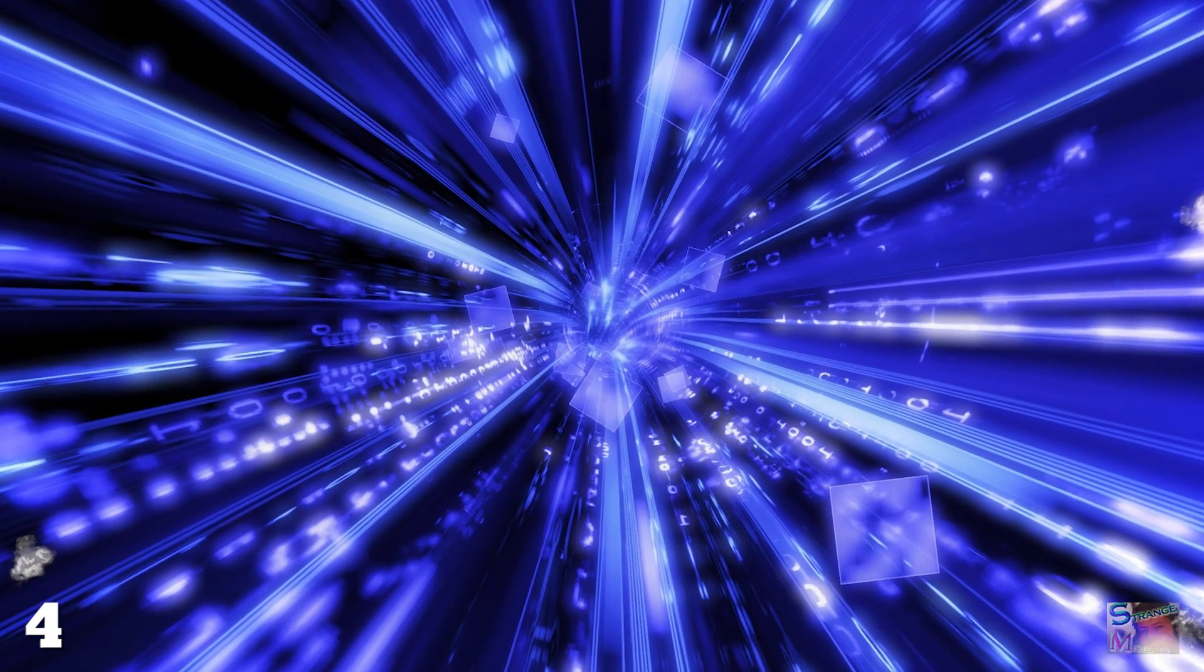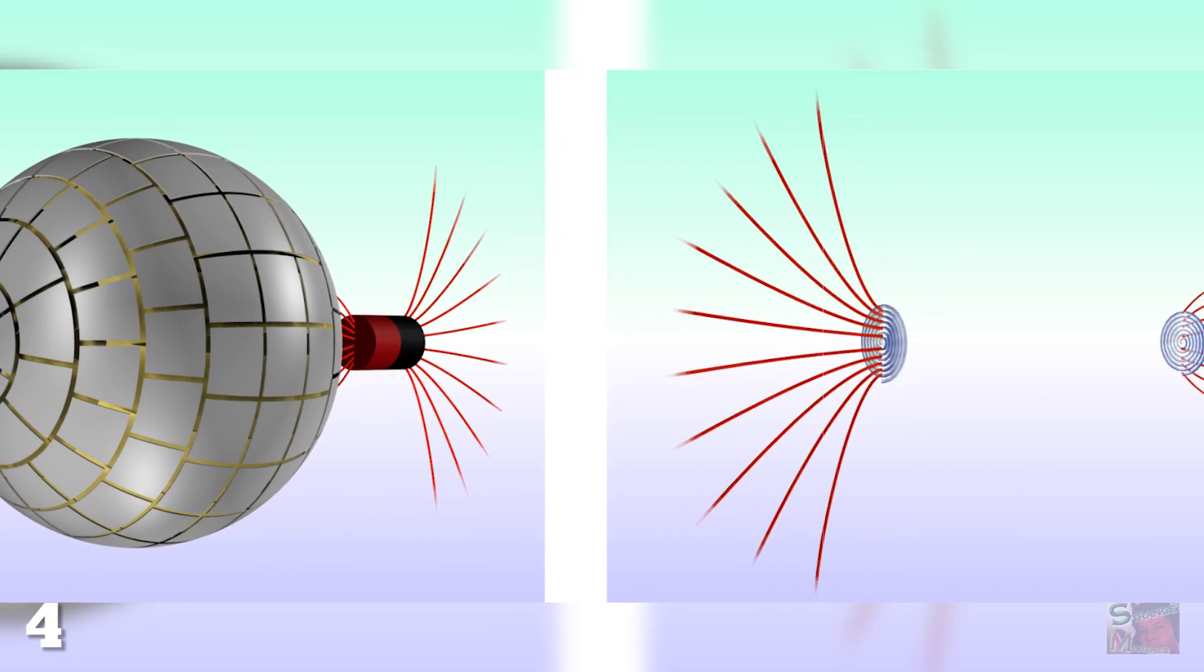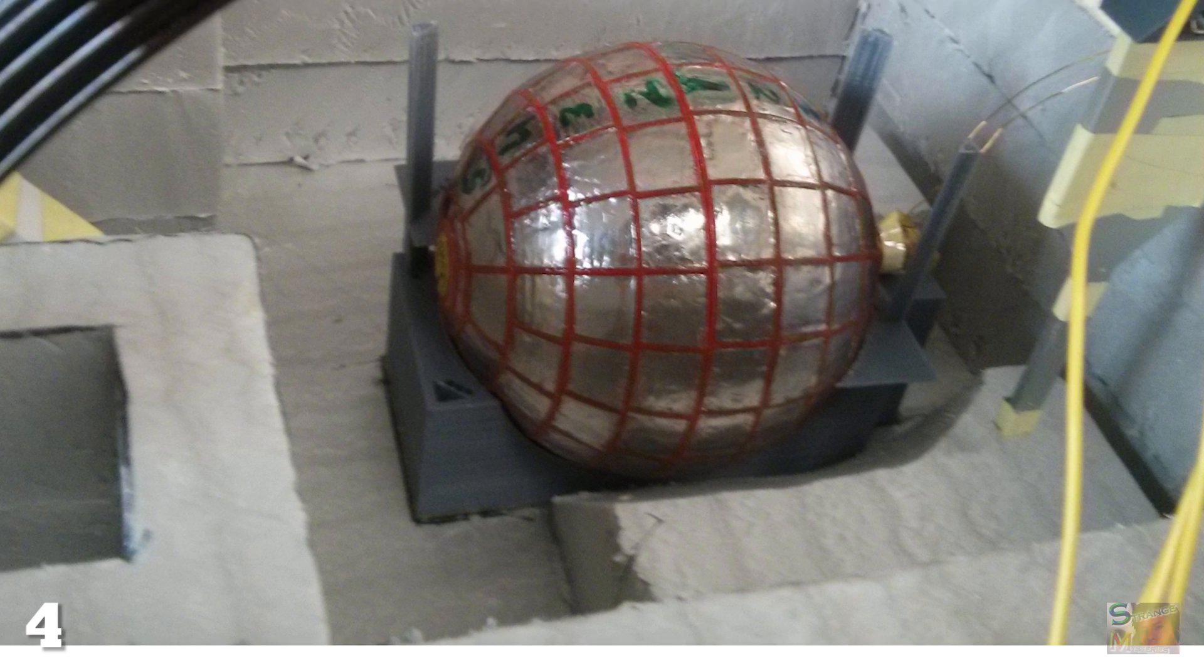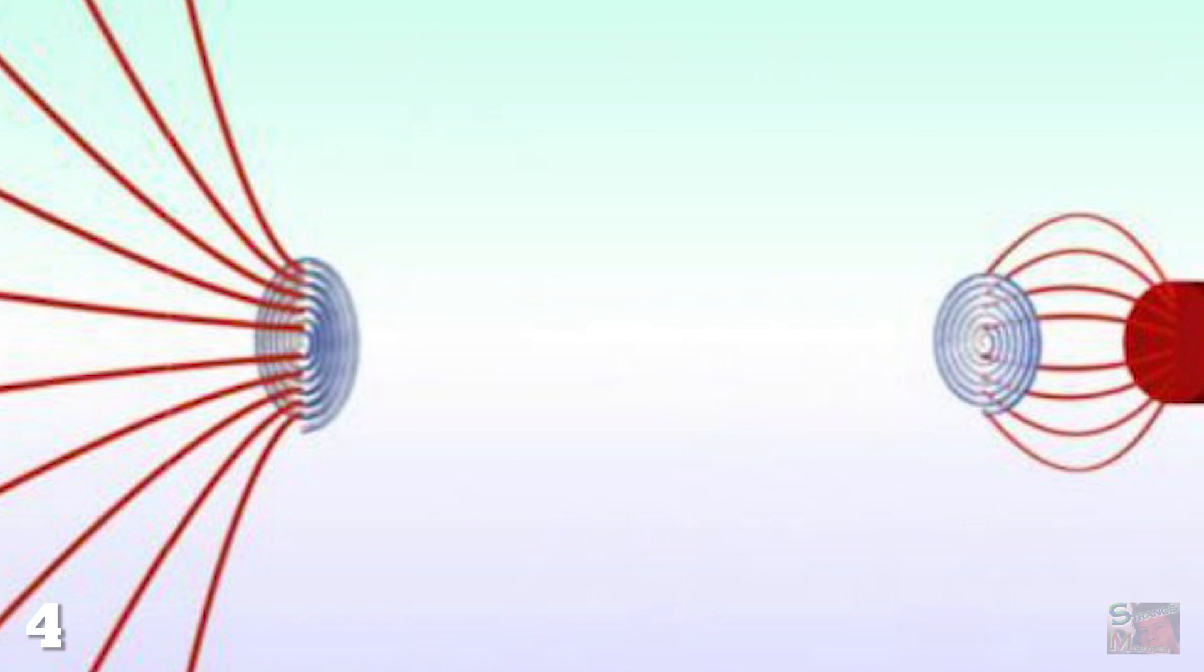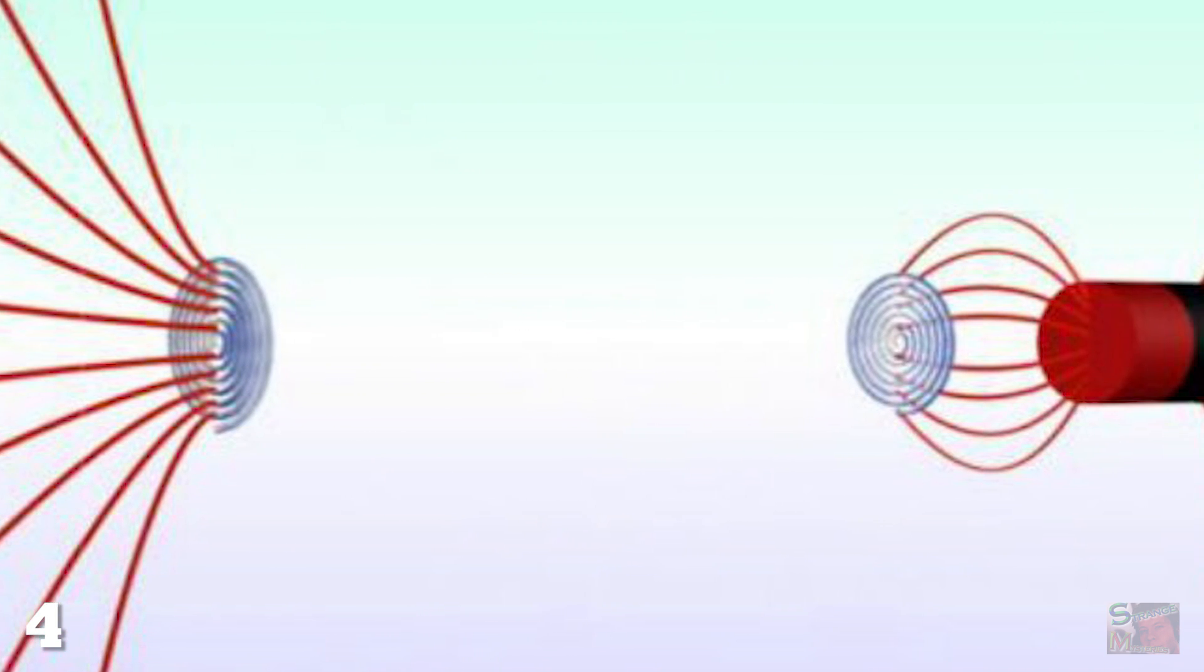However, this wormhole wasn't anything like the ones in Portal. You couldn't send physical matter through it. But you could send magnetic waves from one point to another with the space in between rendered entirely devoid of magnetic forces.